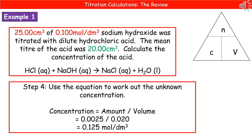The fourth step is to use our formula to work out the unknown concentration. We've got our amount, which is 0.0025, and our volume, which we've converted into decimetres cubed — 0.020. When we divide 0.0025 by 0.020, we get 0.125 moles per decimetre cubed.